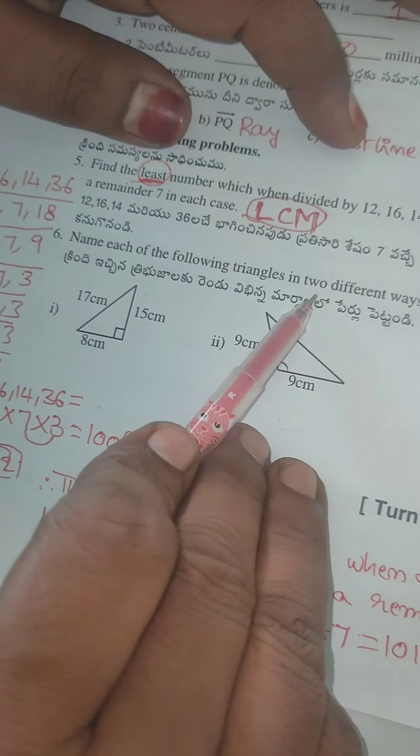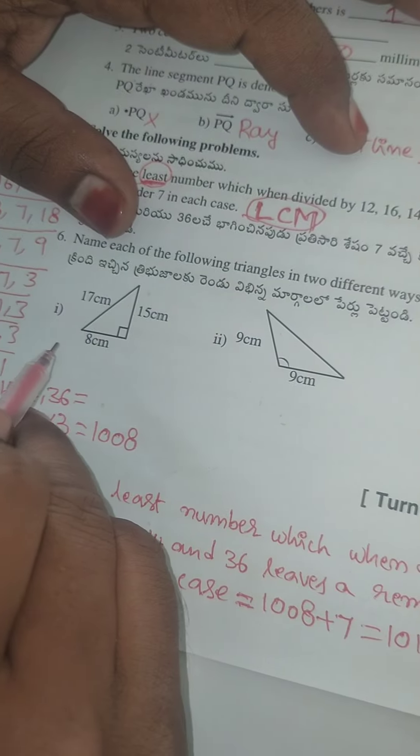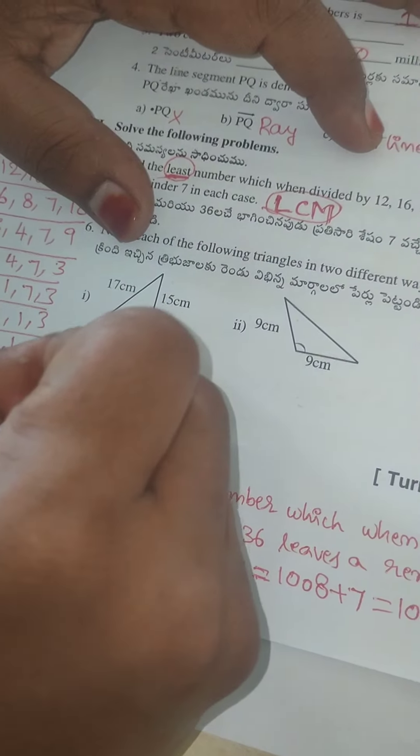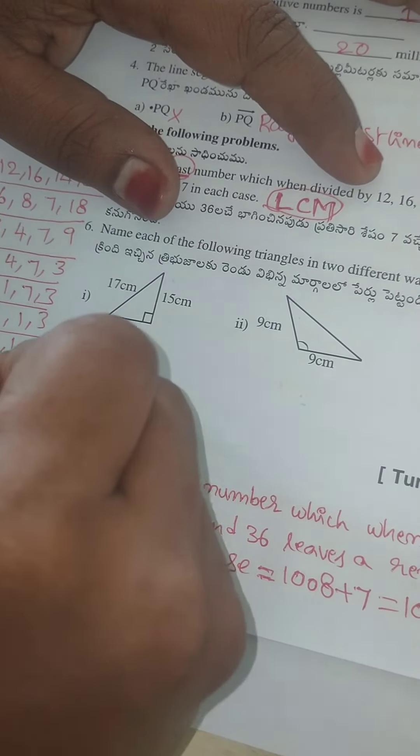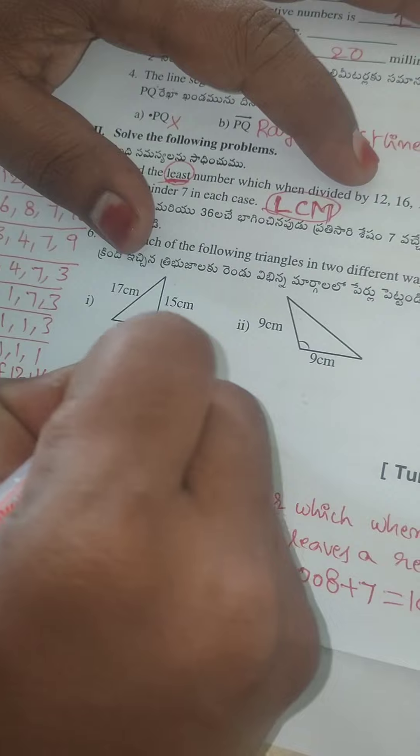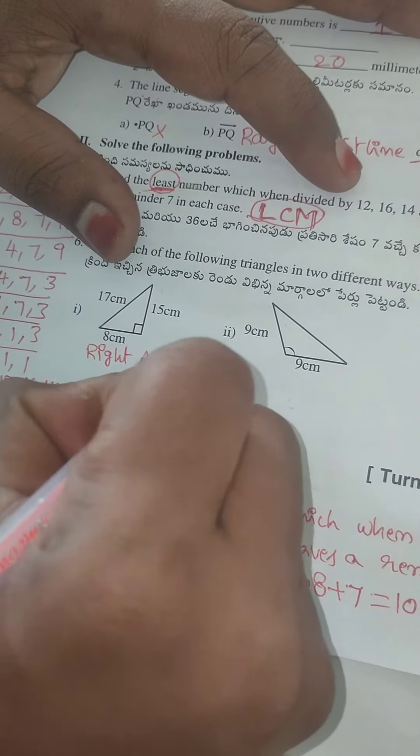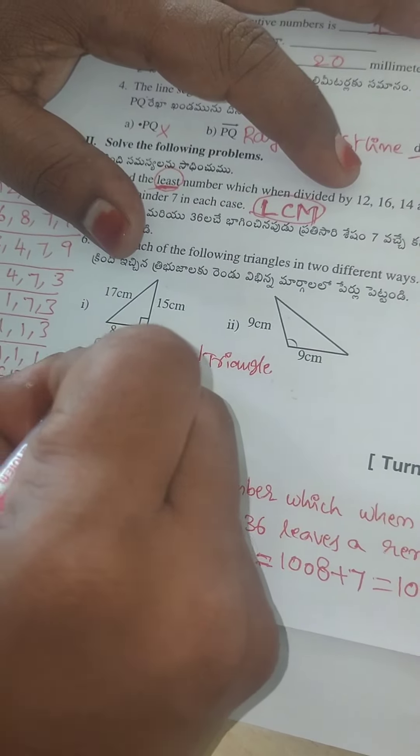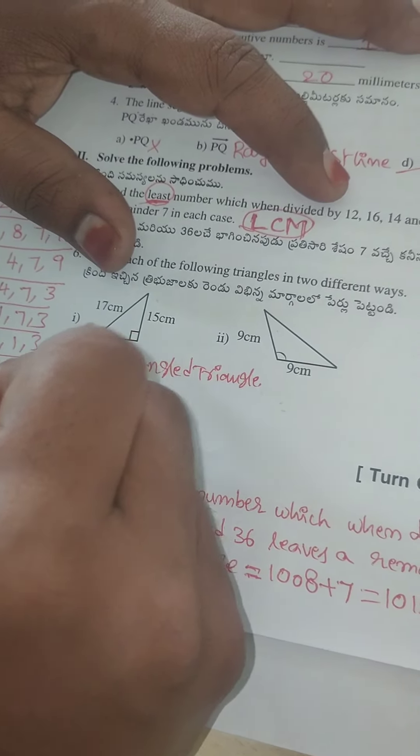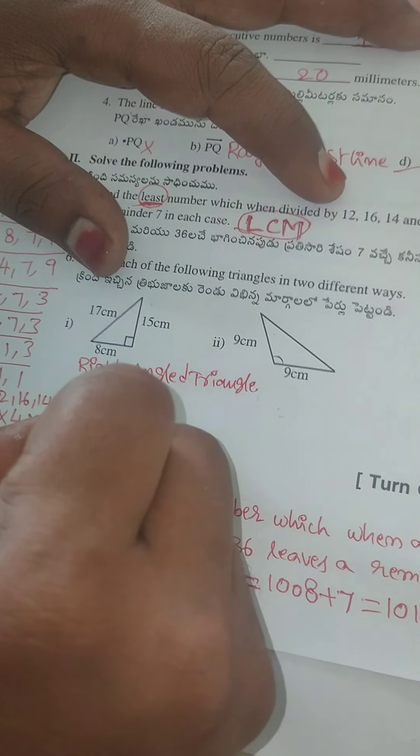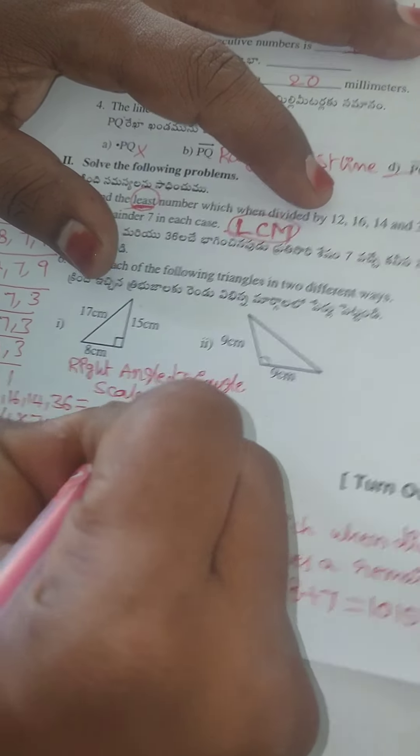Name each of the following triangles in two different ways. First, they given this is right-angled triangle. Why? Because here angle is ninety degrees. So right-angled triangle. The lengths of three sides of the given triangle are different. So this is another name: scalene triangle.